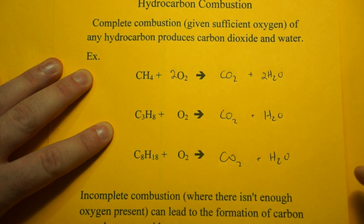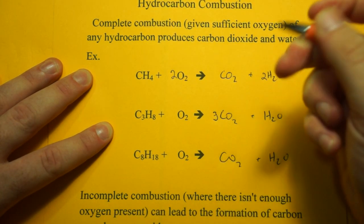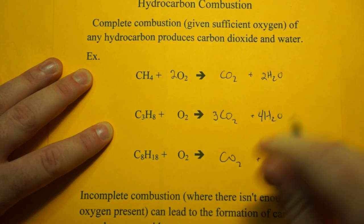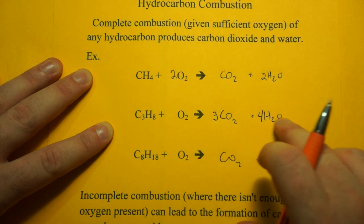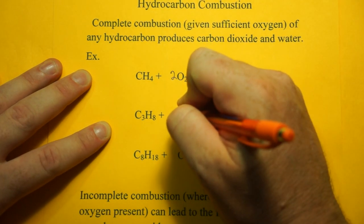Now propane, getting a little more challenging. Three carbons, meaning three carbon dioxide. Eight hydrogens, meaning we get four waters. So we're going to have to figure out our oxygen. We have six oxygens and four oxygens, that's ten oxygens. That means we need five O2s.